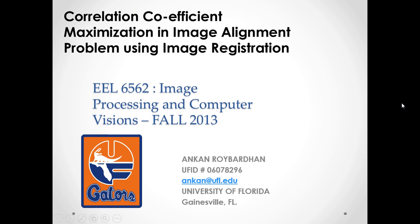Hello, my name is Ankan Raya Bhardhan and welcome to the project for image processing and computer vision for the 2013 semester. The project topic is correlation coefficient maximization in image alignment problem using image registration. We see two important terms: image alignment and image registration. Image registration is a widely used technique in image processing for solving the problems of image alignment.